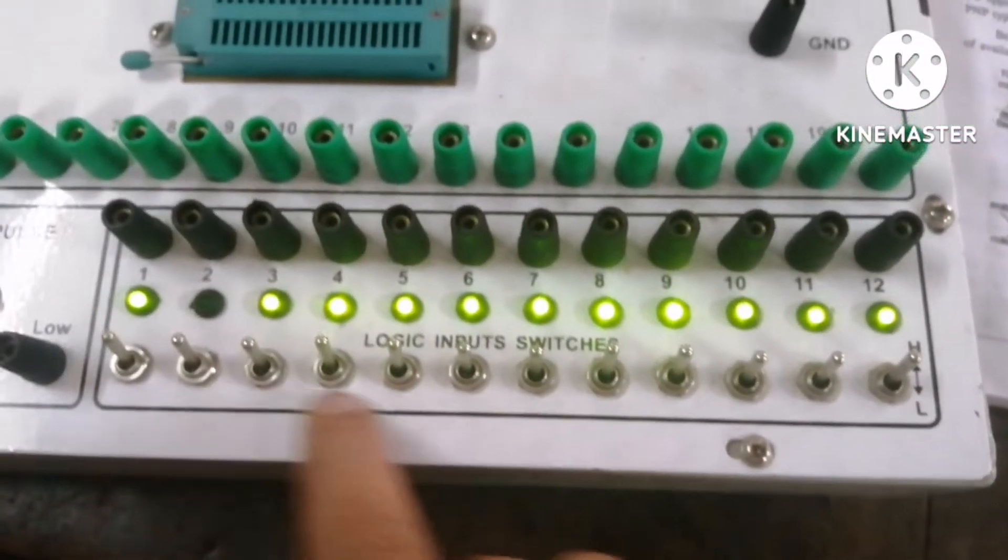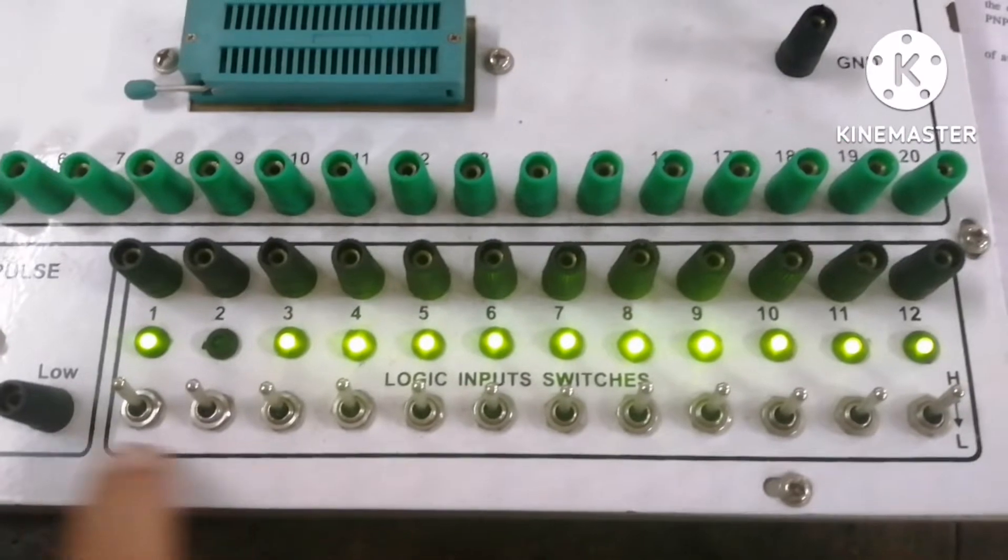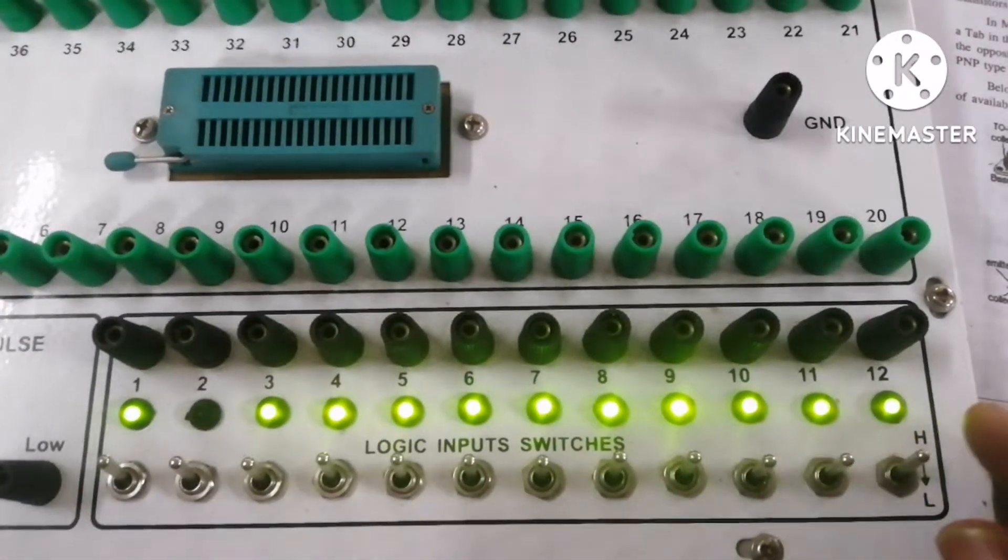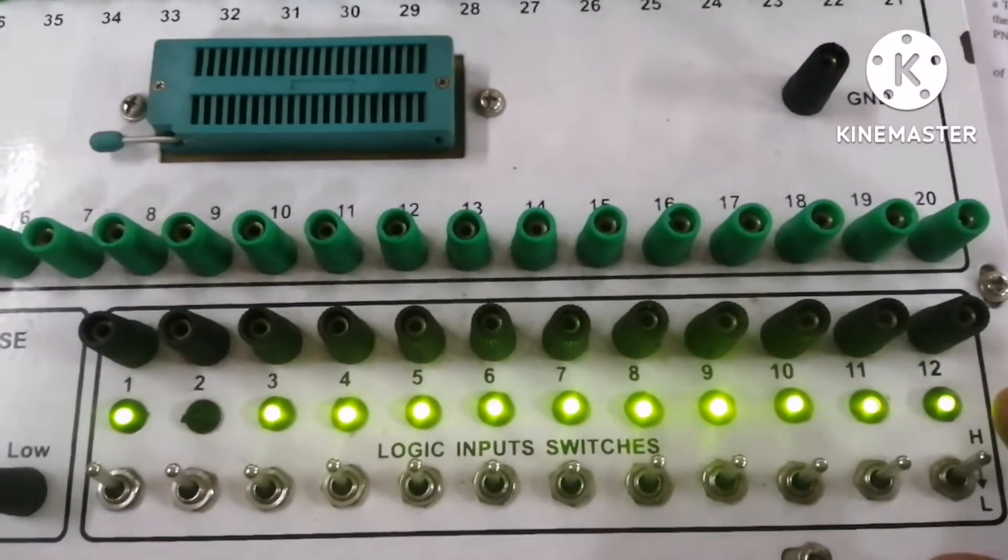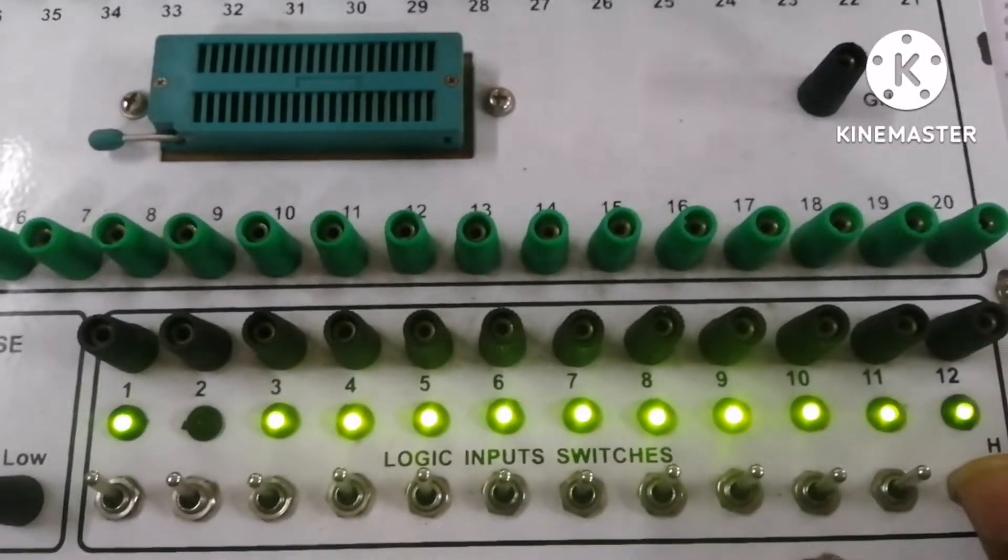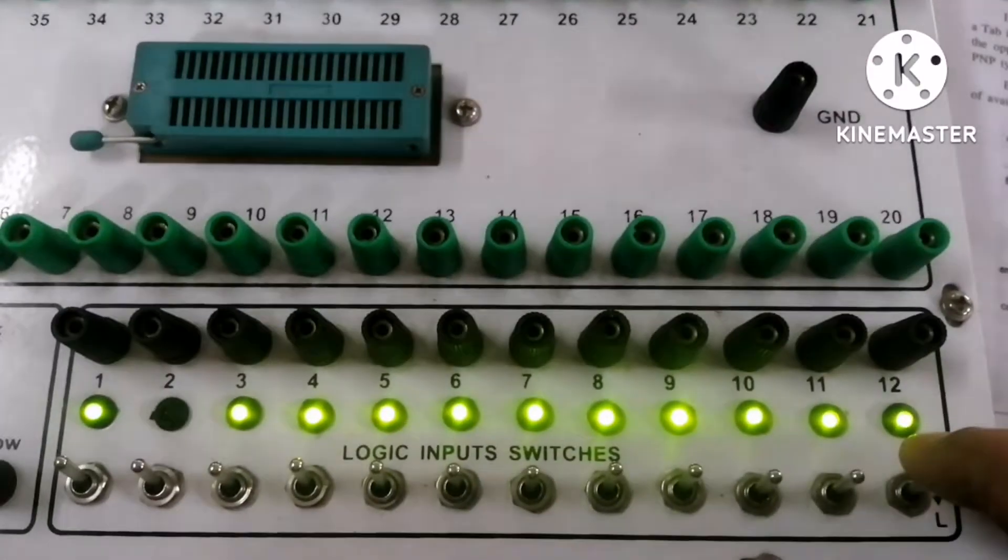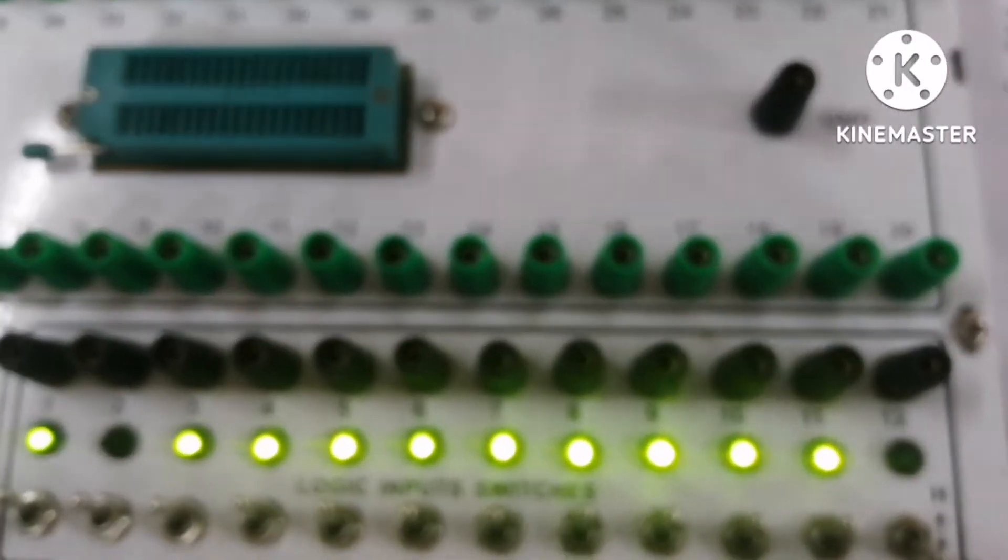And the switches given, 12 switches given here, these are the input switches. With the help of this one we can make high and low like this. So this is low, which means 0, high means 1.